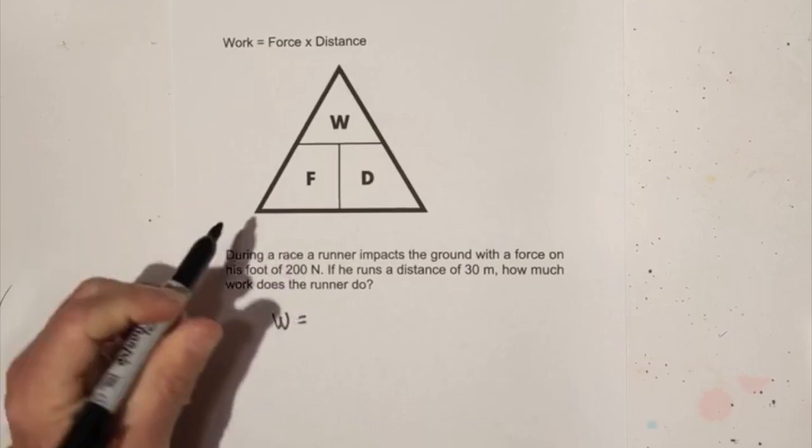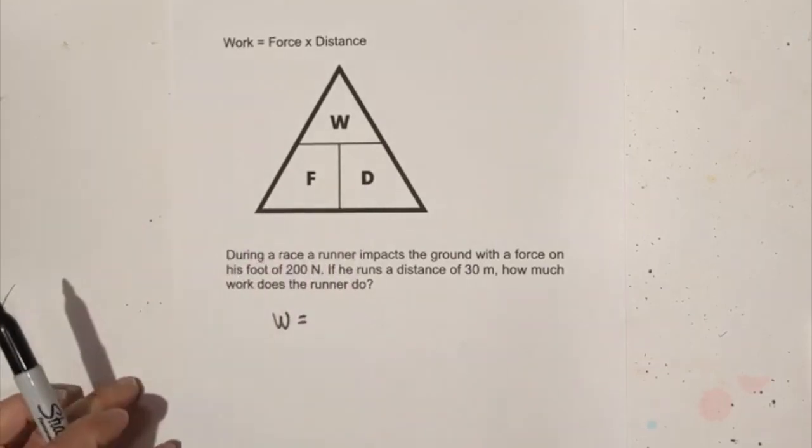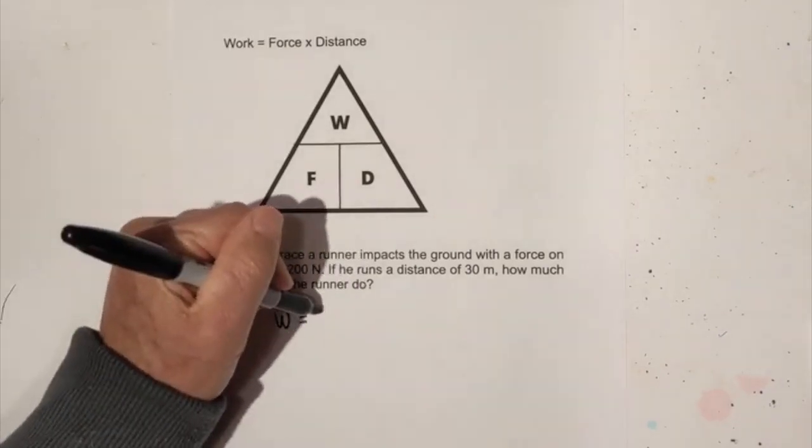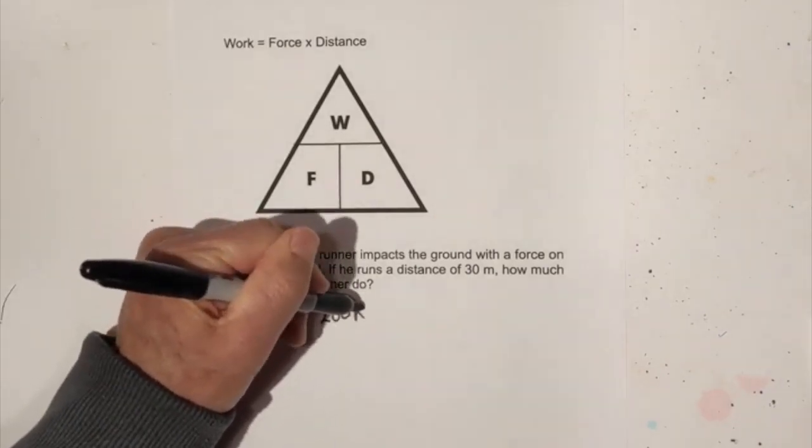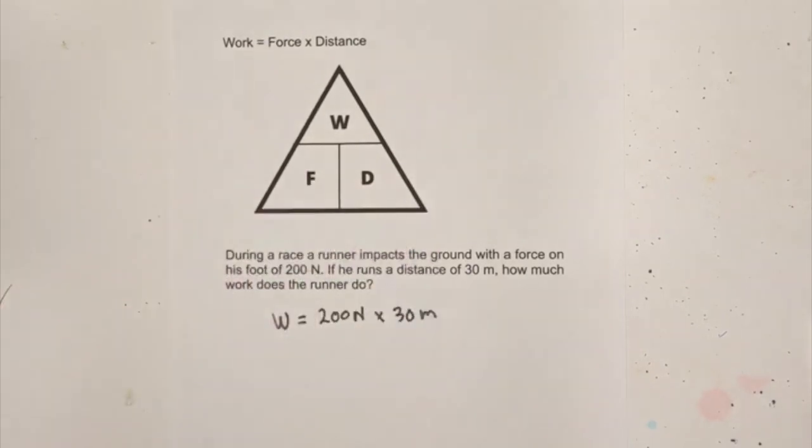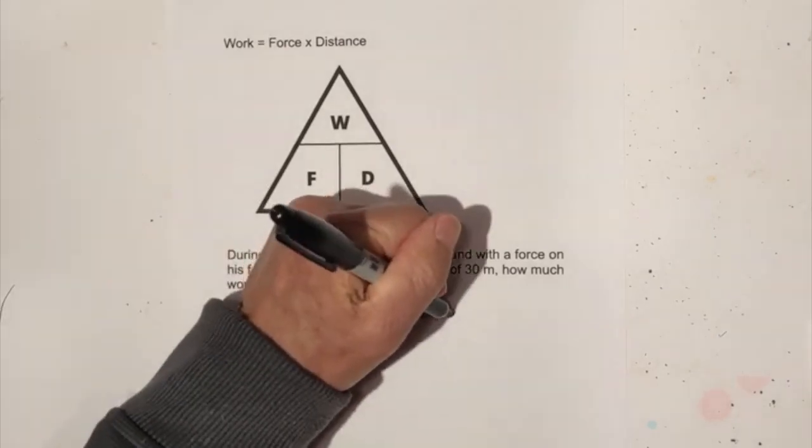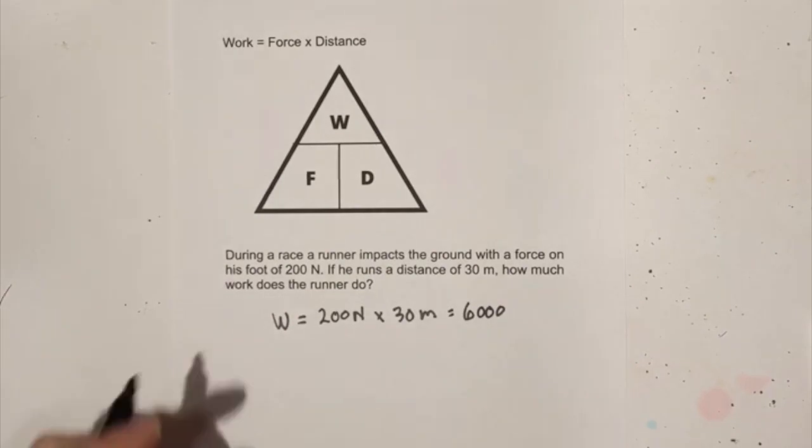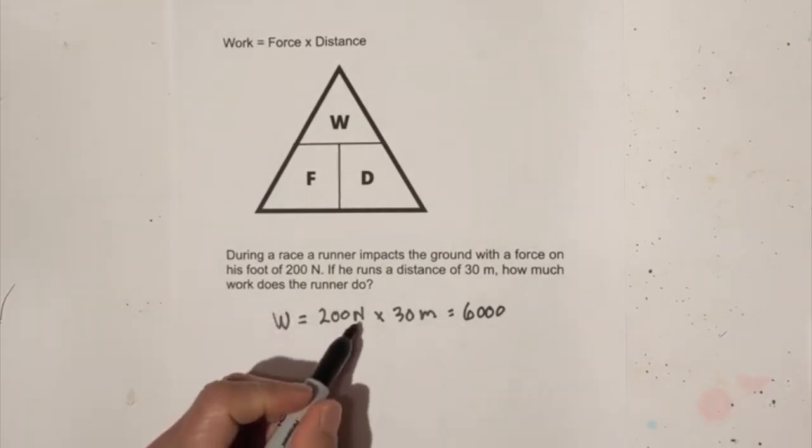We're looking for work and we know that it is force times distance. It says that it strikes with a force of 200 newtons and a distance of 30 meters. So now all we do is multiply 200 times 30 which equals 6000, and then the units keep them in place.